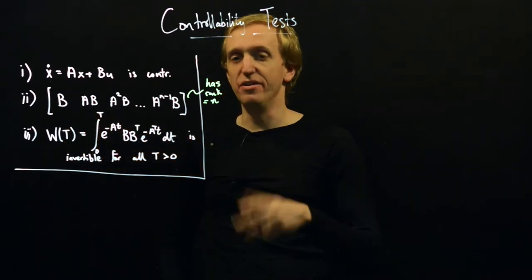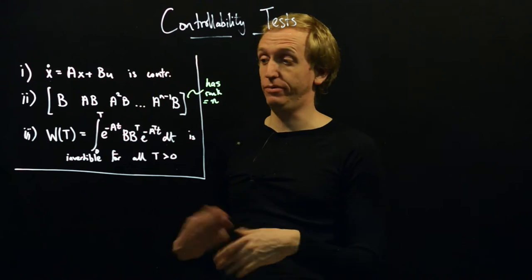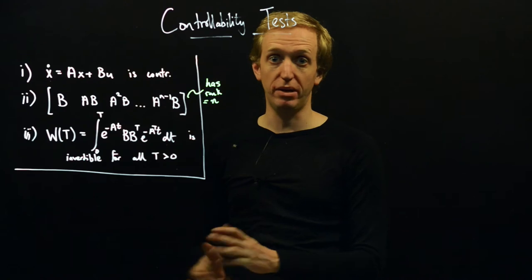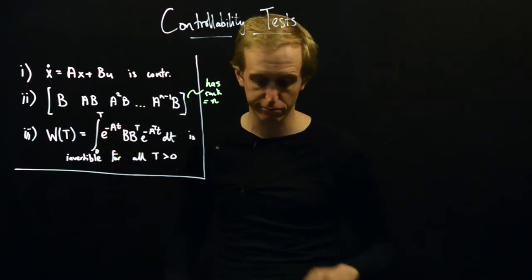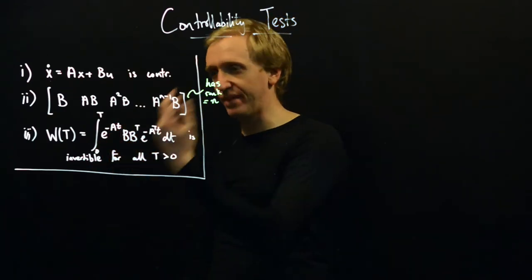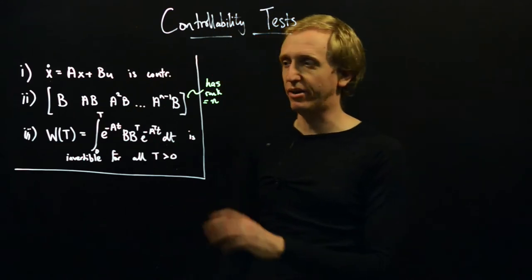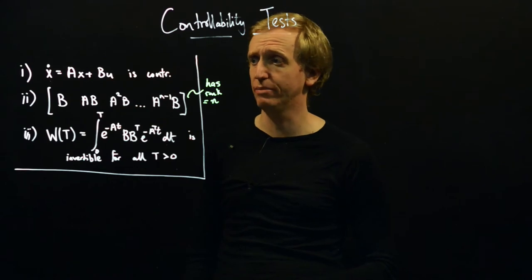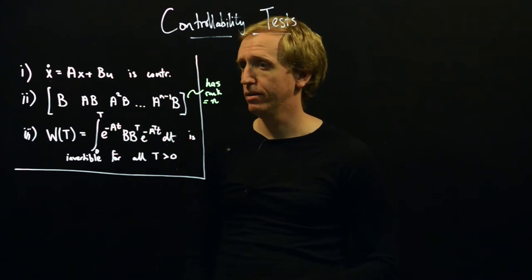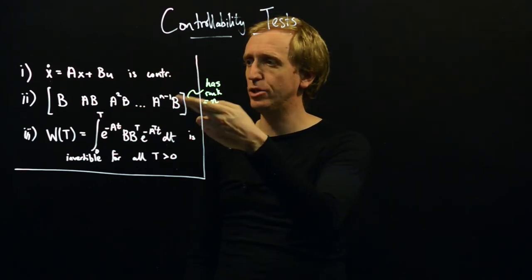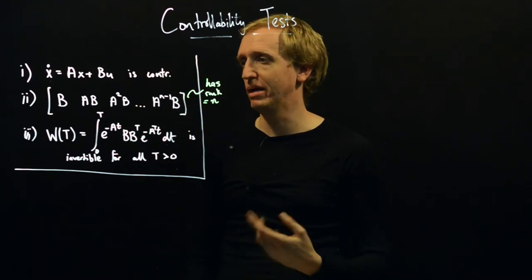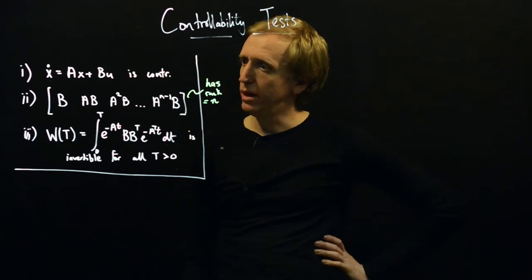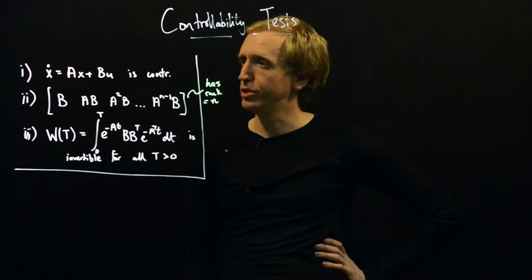The test using the Gramian is: is W(T) invertible for all values of capital T greater than zero? There's also another test in the associated slides called the Popov-Belevitch-Hautus test, which we won't cover here, but there are plenty of other tests for controllability. Checking rank problems are generally numerically a bit messy when using a computer.